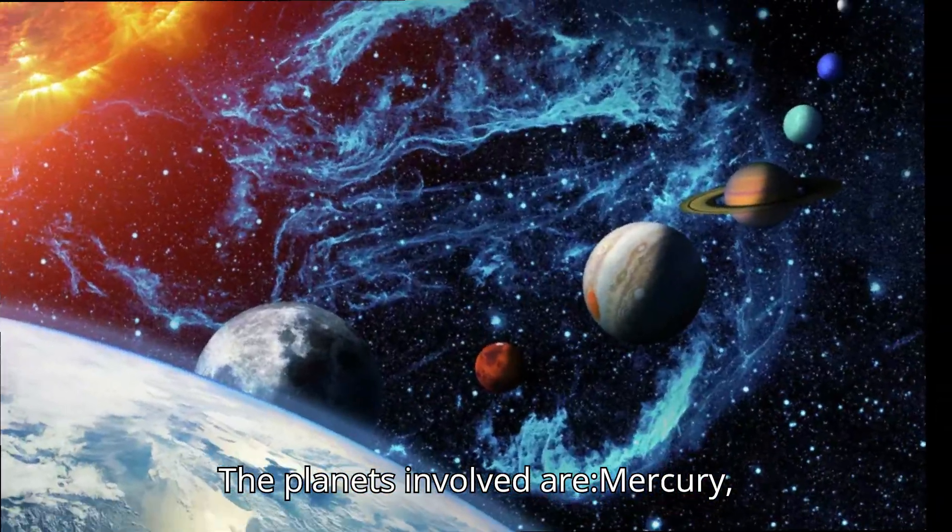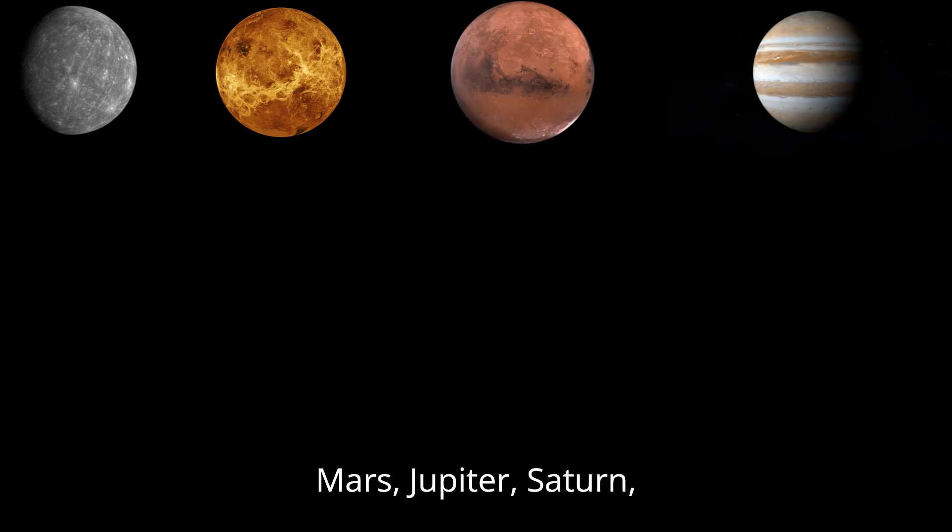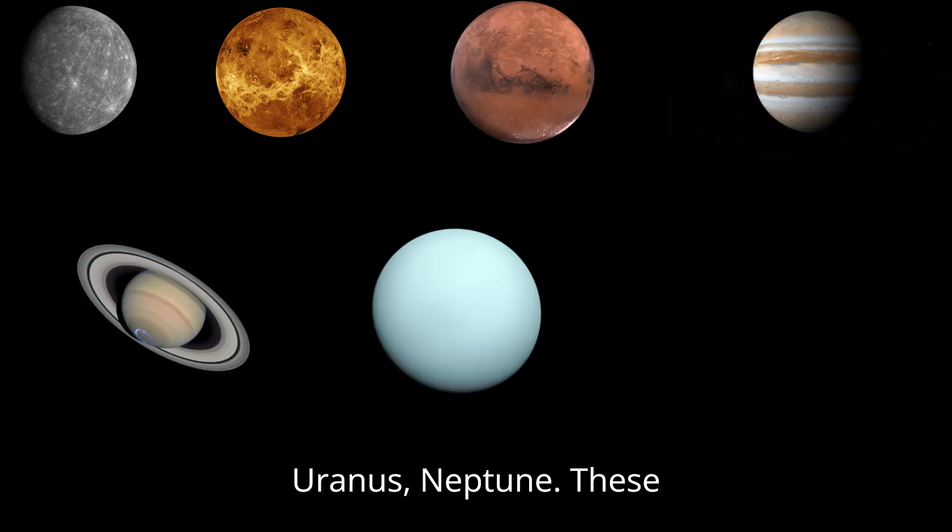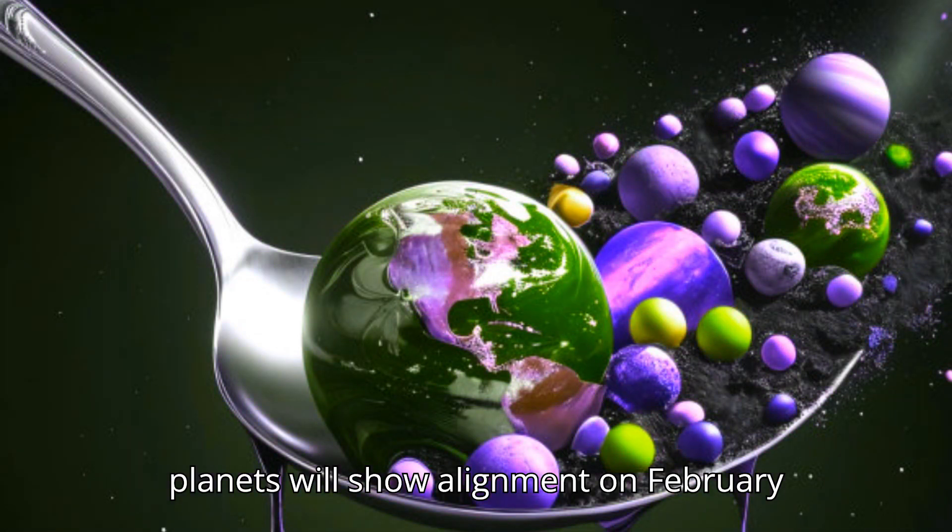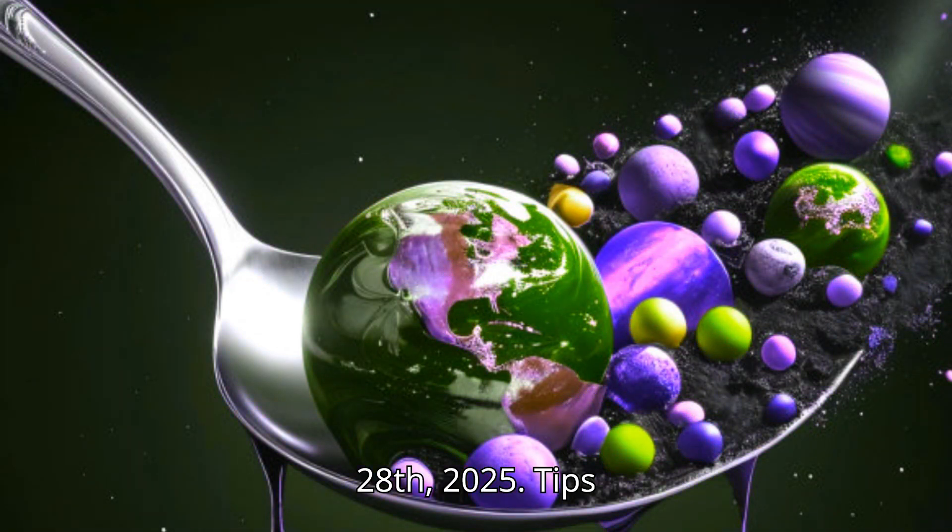The planets involved are Mercury, Venus, Mars, Jupiter, Saturn, Uranus, and Neptune. These planets will show alignment on February 28, 2025.